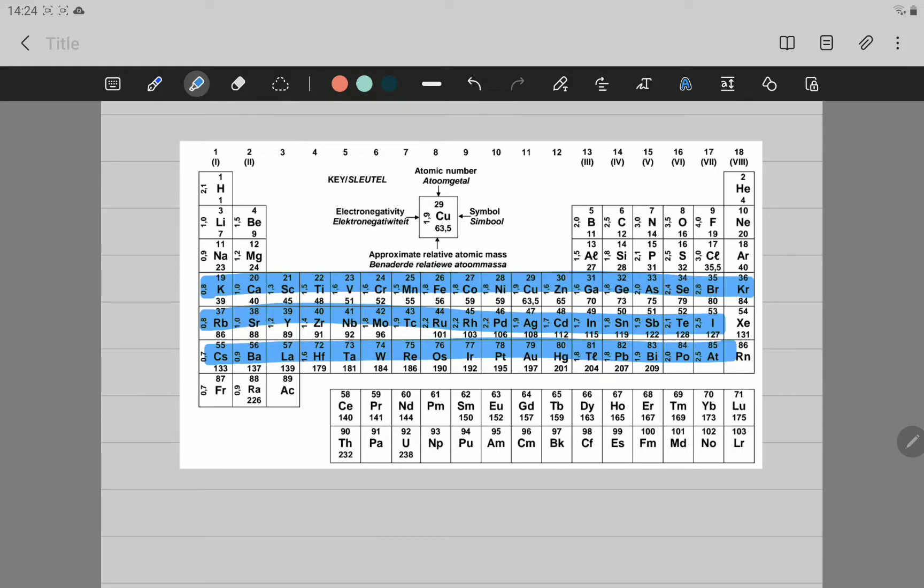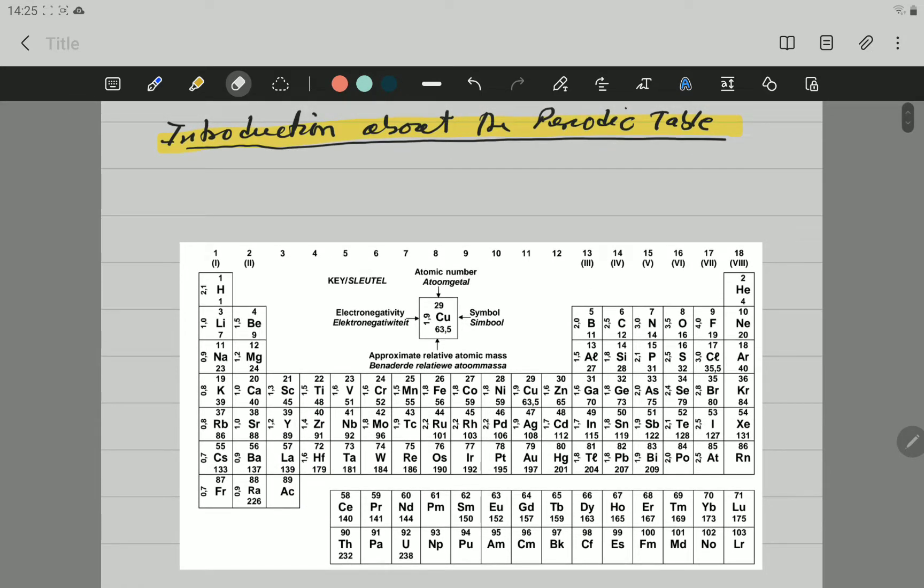And we also have vertical columns, which will be, for example, these are the vertical ones. Now, in the Periodic Table, we have a specific number for those columns and those periods. So, the columns, the vertical ones, are going to be called groups.